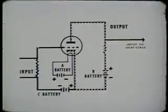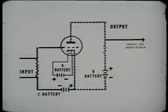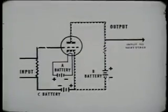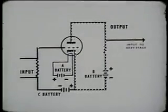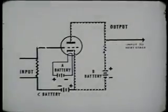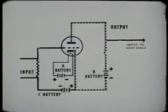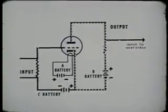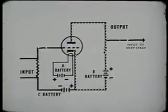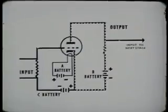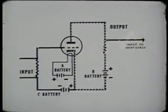When a small signal is applied to the grid, it varies the difference in potential between the grid and cathode. This causes the current flowing through the tube to vary in accordance with the difference in potential between the grid and cathode. This varying current flow through the tube causes the voltage across the plate load to decrease and increase. This voltage change across the output is an amplified reproduction of the input.